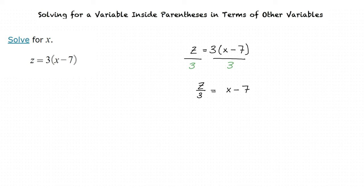Oh, I see. Now we can add 7 to both sides. When we do this, we get z over 3 plus 7 equals x, which is our final answer.